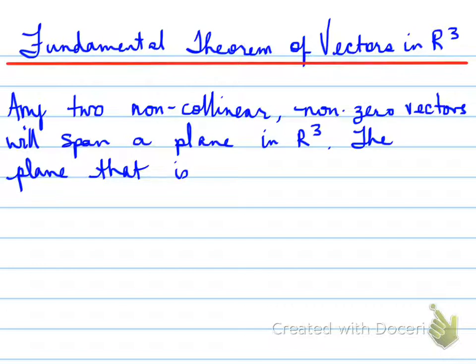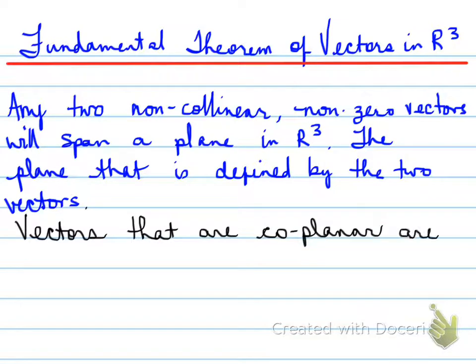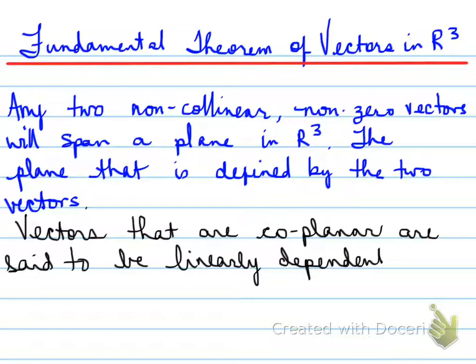This is exactly the same concept as in R2, but to span a plane — think of your hand on a piece of paper. The plane is defined by the two vectors when you span a plane. Vectors that are coplanar are said to be linearly dependent.